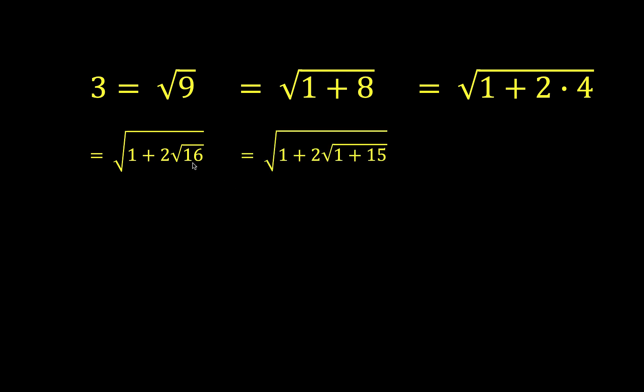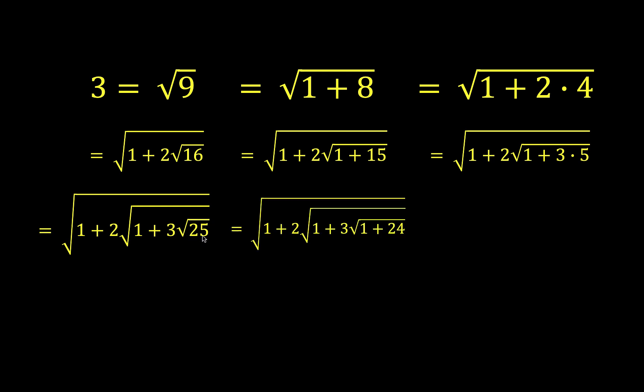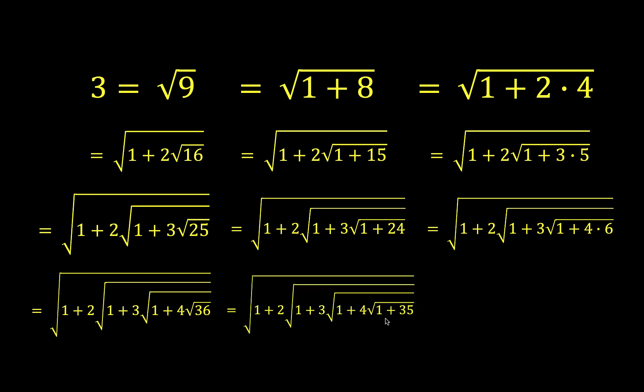But this radicand 16 also can be split as 1 plus 15. And this 15 can be written as 3 times 5. And this 5 can be written as square root of 25. And this 25 can be split as 1 plus 24. And this 24 can be written as 4 times 6. And this 6 can be written as square root of 36. And this square root of 36 is split again as 1 plus 35. And this 35 is written as 5 times 7.